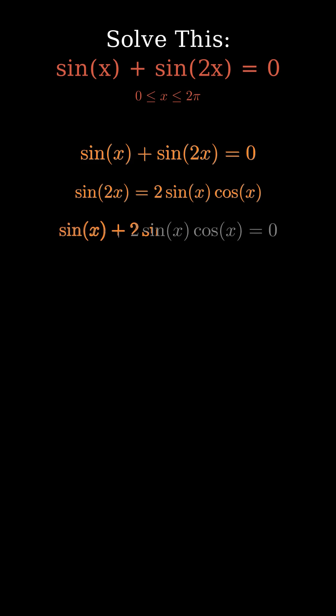Now we substitute this identity into the original equation. Instead of sine 2x, we'll write 2 sine x cosine x.